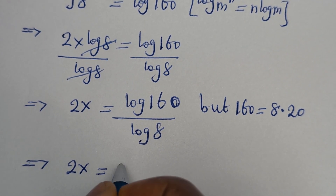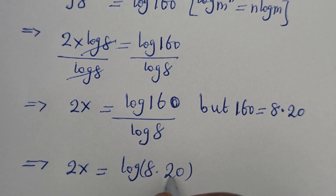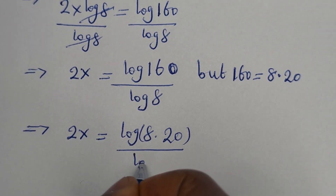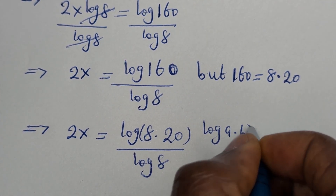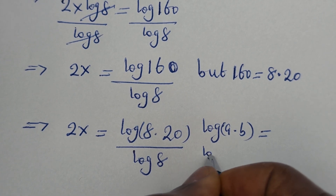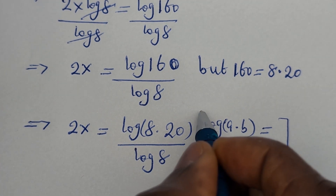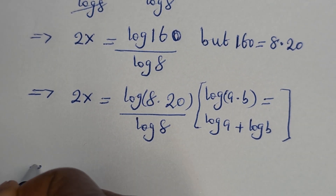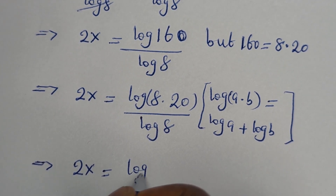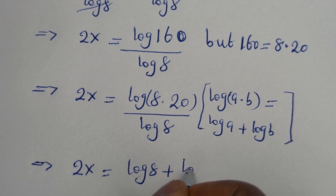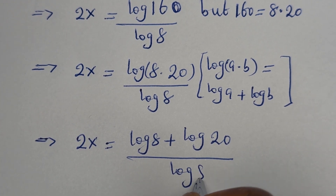2x is equal to log 8 multiplied by 20 divided by log 8. If you have log A multiplied by B, this is equal to log A plus log B. So 2x is equal to log 8 plus log 20, divided by log 8.